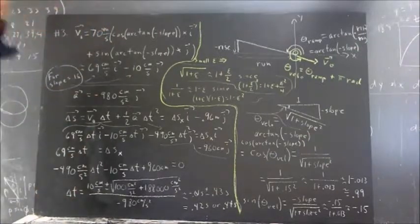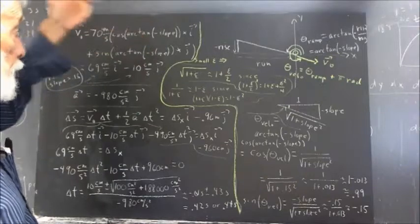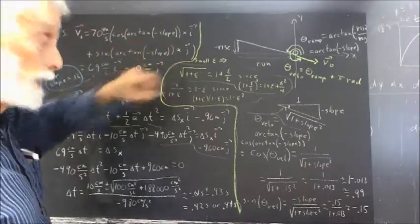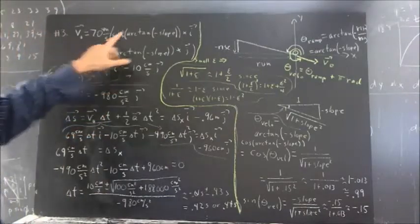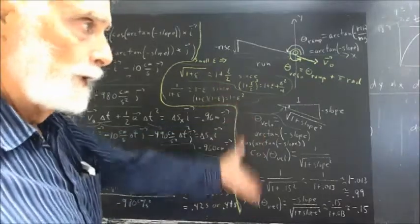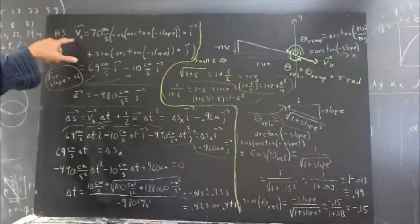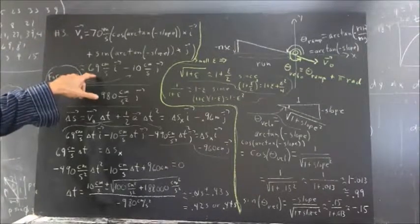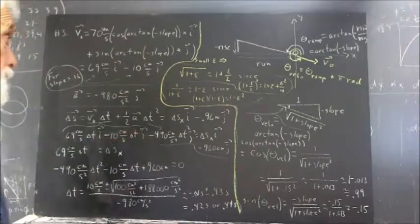And there are many ways to find the sine and cosine of the arc tangent of negative the slope. None of them require that you actually take that arc tangent, although with a calculator that would be an easy enough step. But one way or another, using the approximations we used here, using the triangle that we have here, we can quickly determine that the initial velocity would be about 69 centimeters per second times I minus 10 centimeters per second times J.